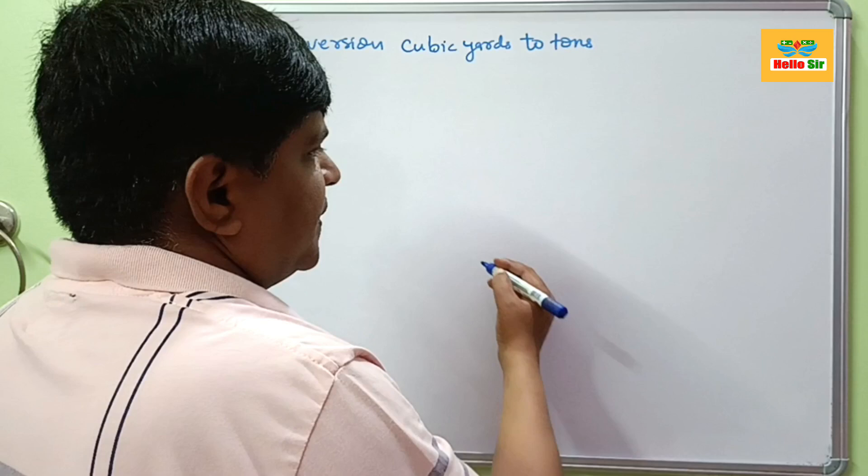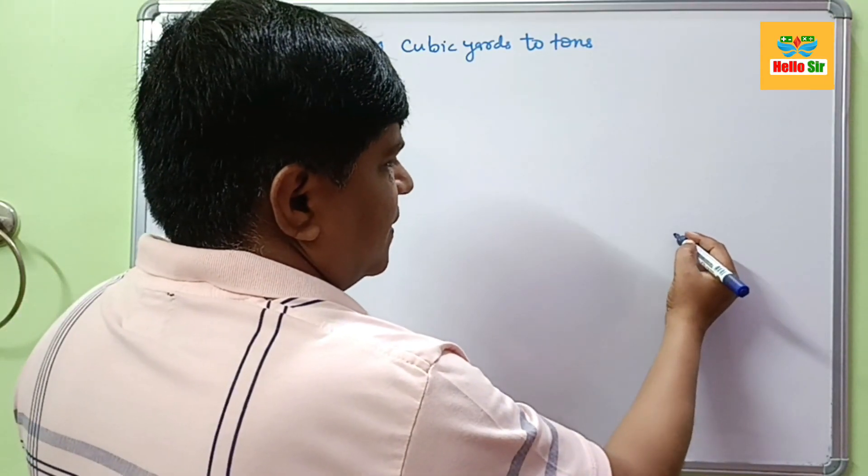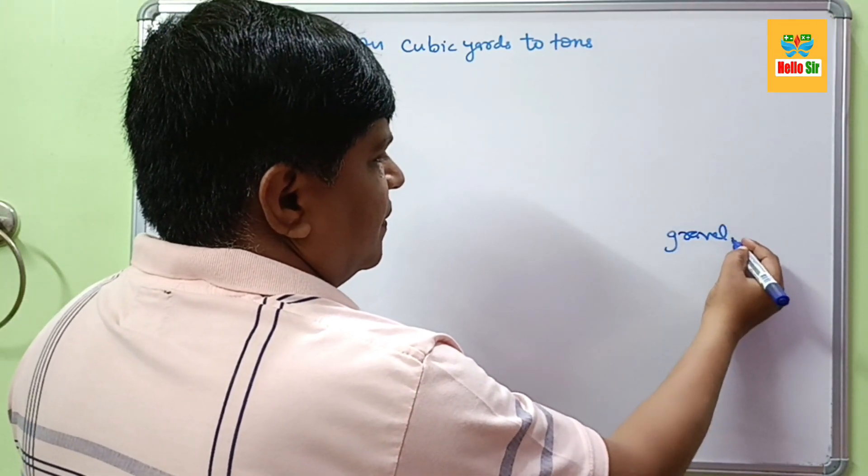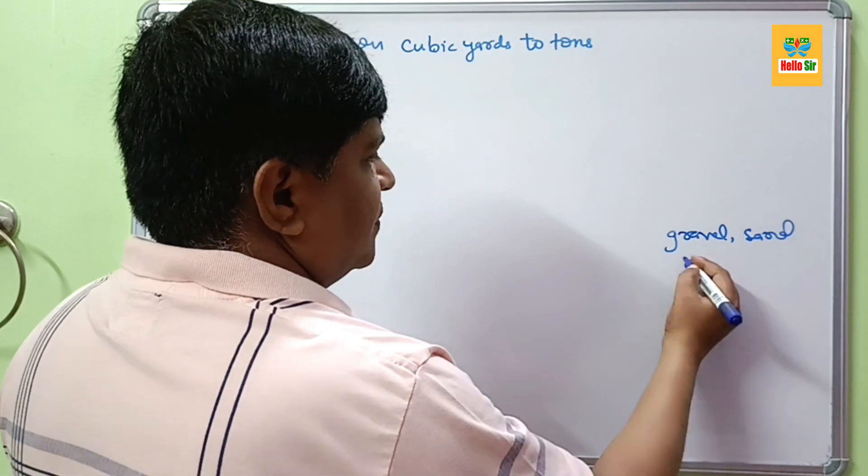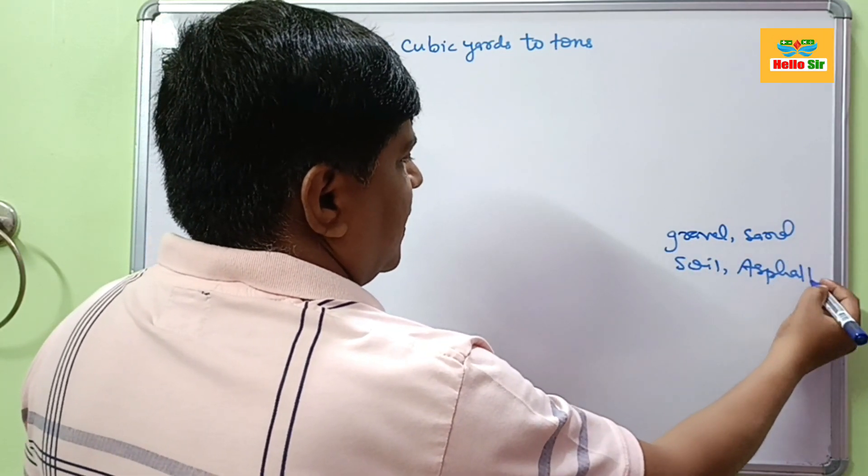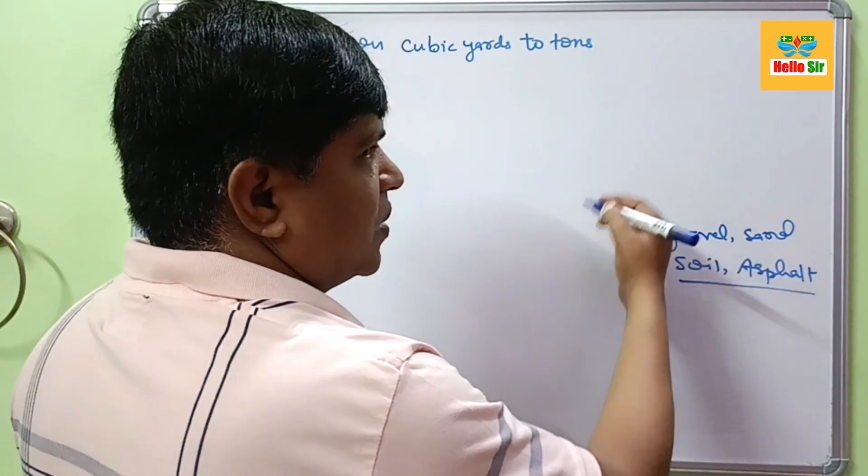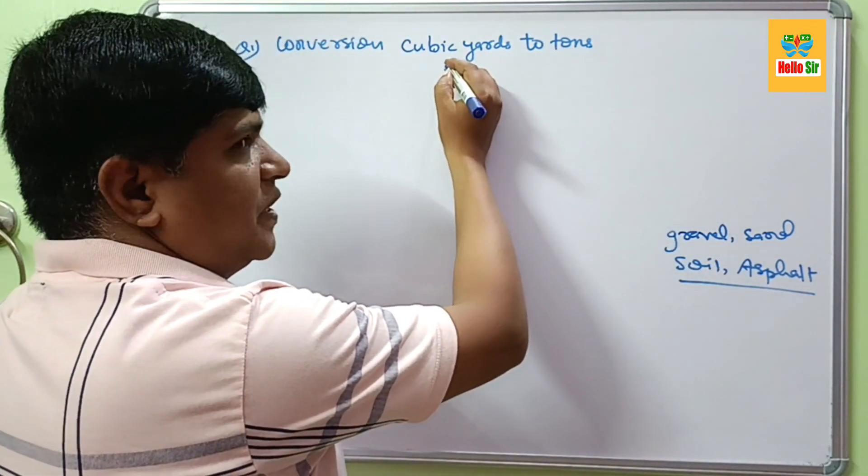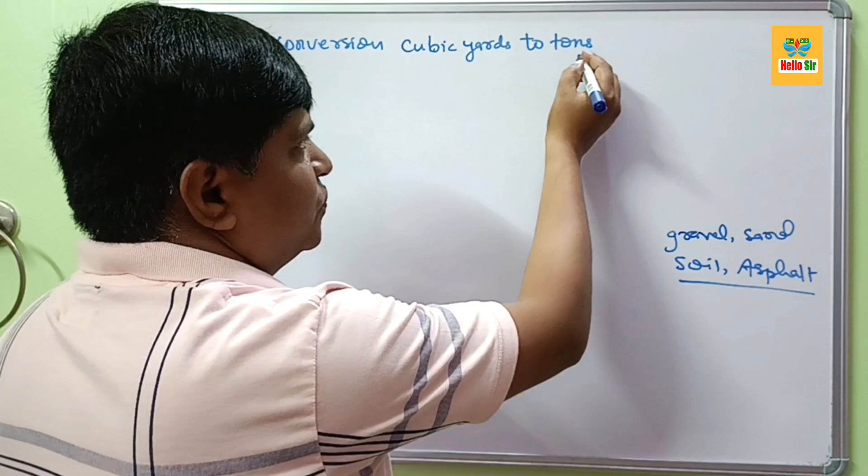There are various construction materials like gravel, sand, soil, asphalt, and there are questions about conversion from tons to cubic yards and cubic yards to tons.